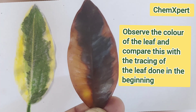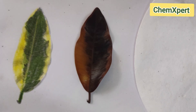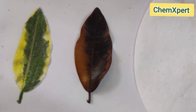The green areas in the tracing correspond to the black areas on the leaf now. This is because iodine turns blue or black in the presence of starch. In the green areas, starch was formed through photosynthesis. In the yellow areas, no chlorophyll is present, so no photosynthesis took place — those areas remain reddish-brown, which is the color of iodine solution. This activity concludes that chlorophyll is a necessary requirement for photosynthesis; only in the presence of chlorophyll does photosynthesis take place.